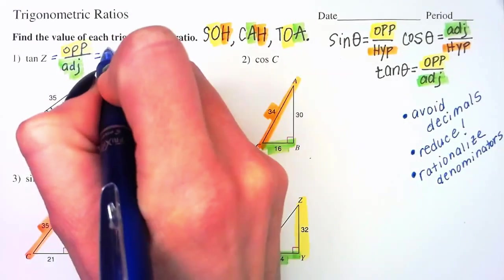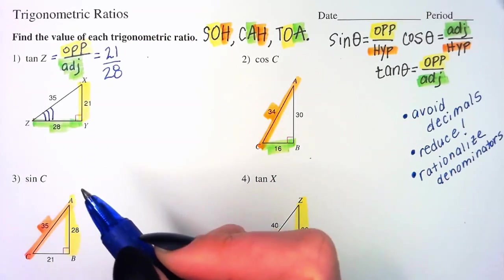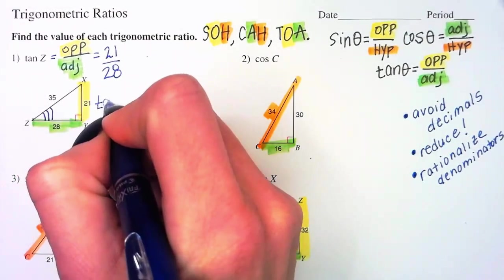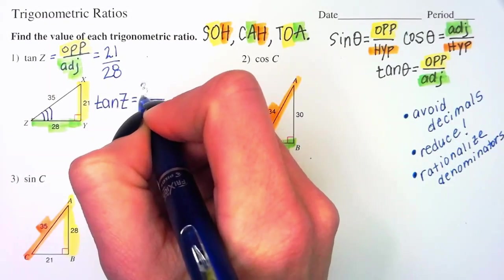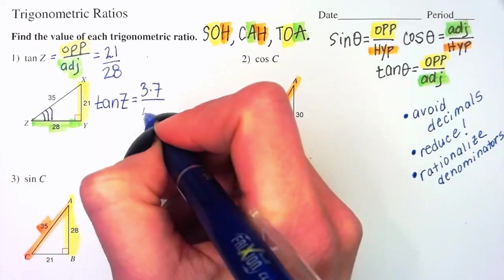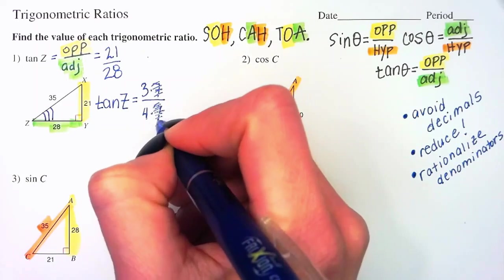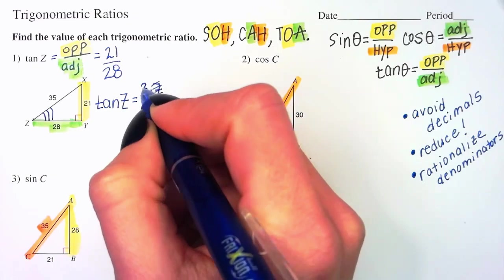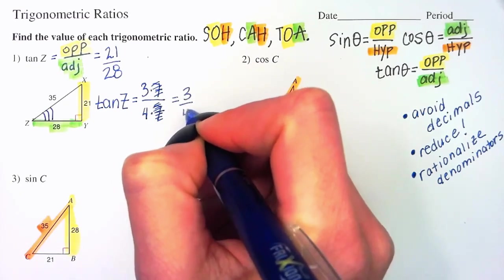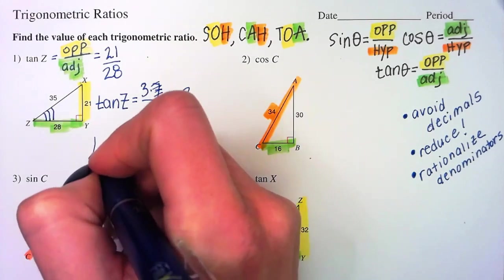Opposite over adjacent. So, that leaves me with 21 over 28. And while you're not wrong, you're not totally right. So, let's do a little bit better than that. Can we reduce that? What number is a factor of both 21 and 28? Well, 21 is 3 times 7. There's my prime factorization. And this one is really 4 times 7. Not quite prime, because that could be 2 times 2. So, we are going to reduce. I don't want to say cancel. We reserve that word for addition and subtraction. We're reducing or we're simplifying. So, we're reducing and we'll get 3 fourths. Final answer. Tan Z equals 3 fourths.